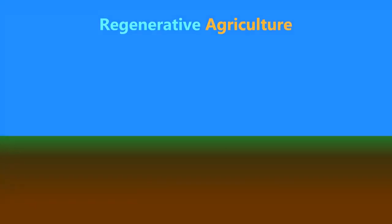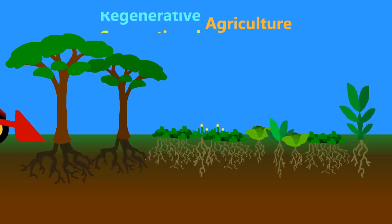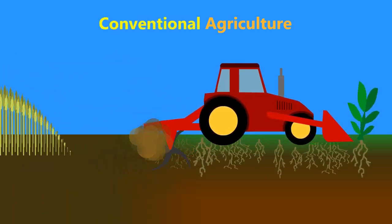Regenerative agriculture is a set of farming practices that increase biodiversity and soil organic matter. Currently, most agricultural practices are devastating to biodiversity.